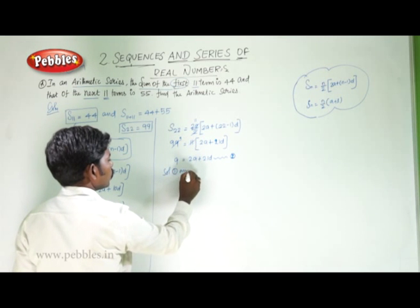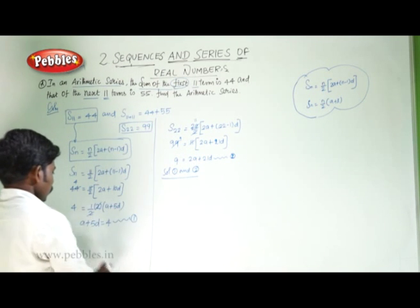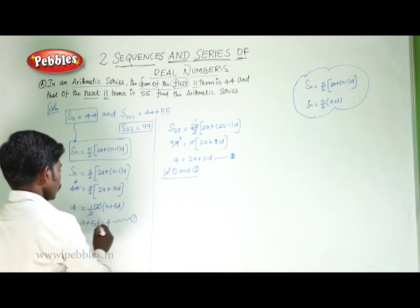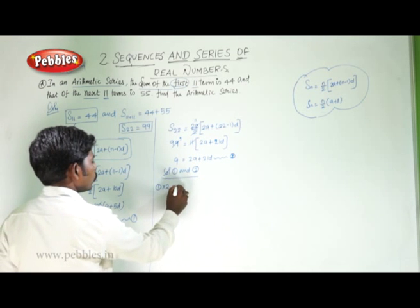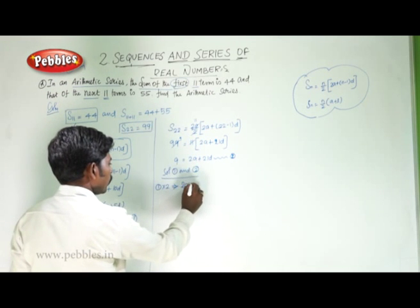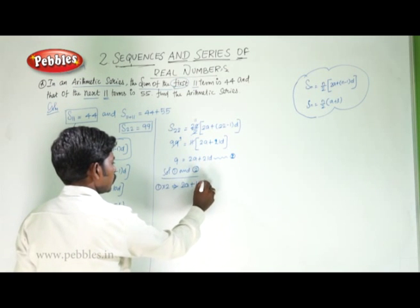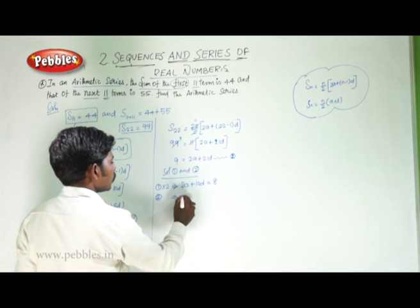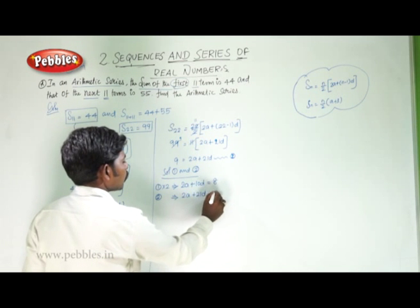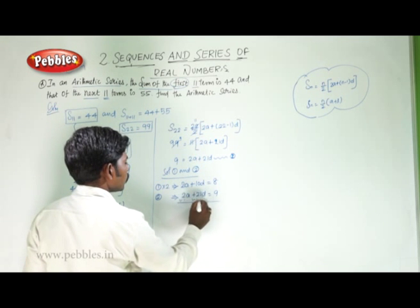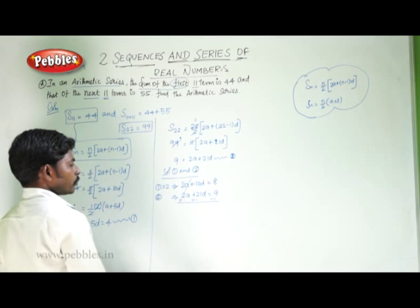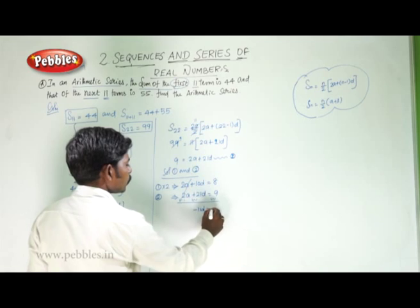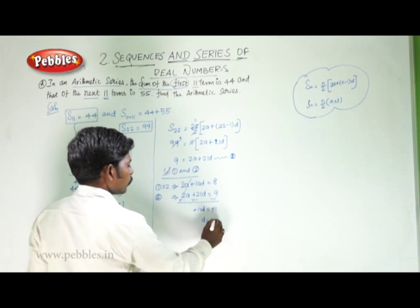Solving equations 1 and 2: equation 1 is a plus 5d equals 4, and equation 2 is 2a plus 21d equals 9. Multiplying the first equation by 2 gives 2a plus 10d equals 8. Subtracting from the second equation: 2a cancels, and 10d minus 21d is minus 11d equals 8 minus 9, which is minus 1. So d is equal to 1 by 11.